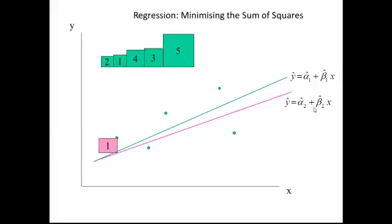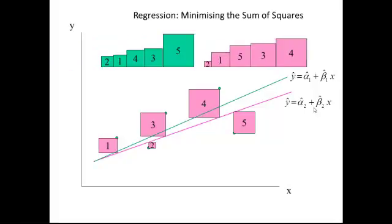For this new line we get a different set of sums of squares, shown by the pink squares here. We look at the distance to the pink line for each of our observations.